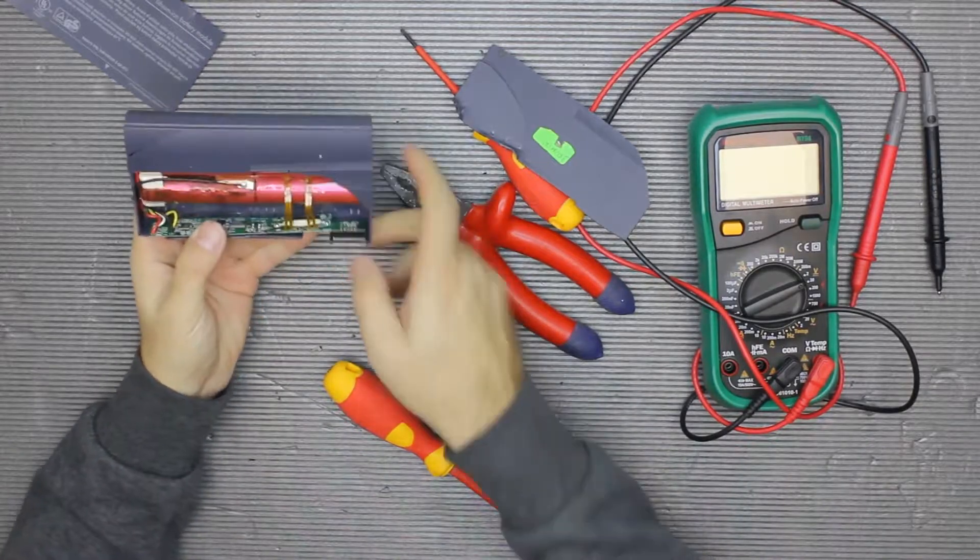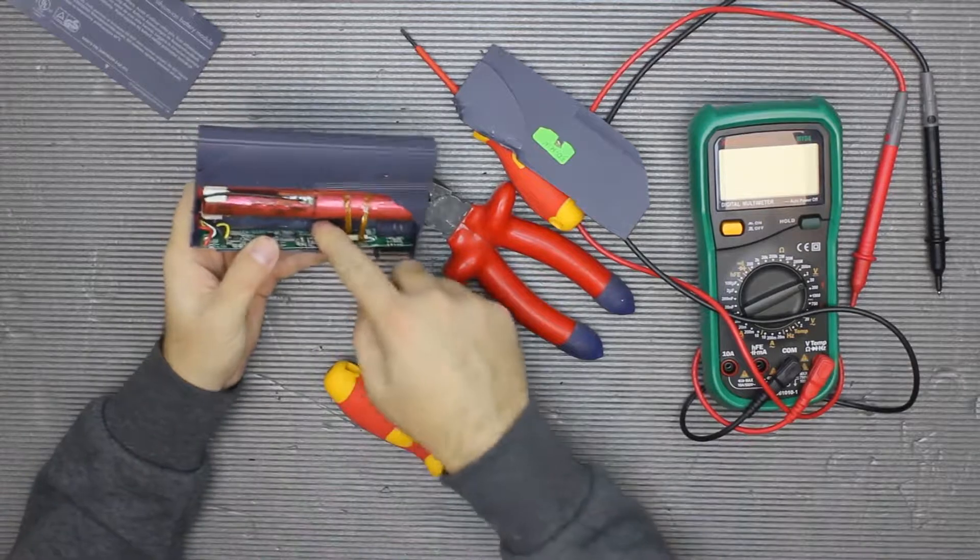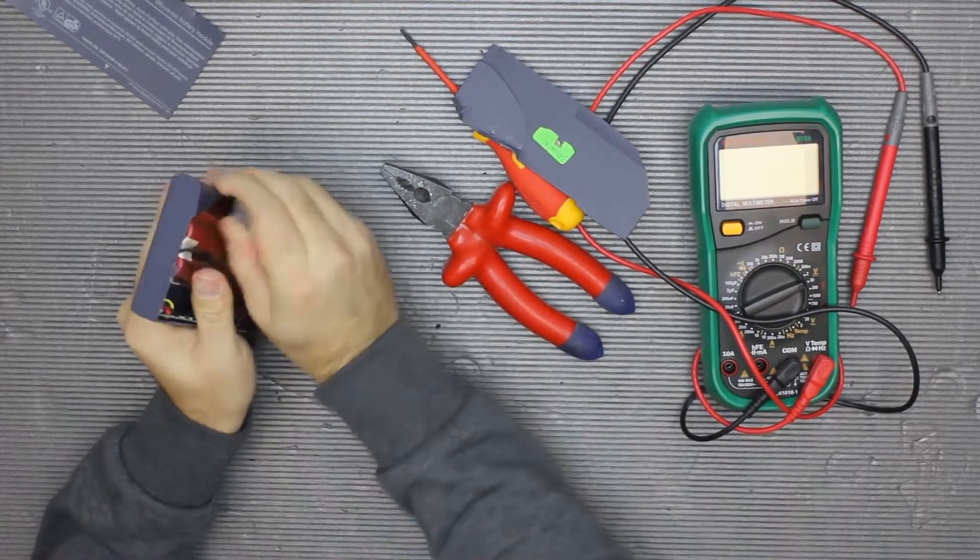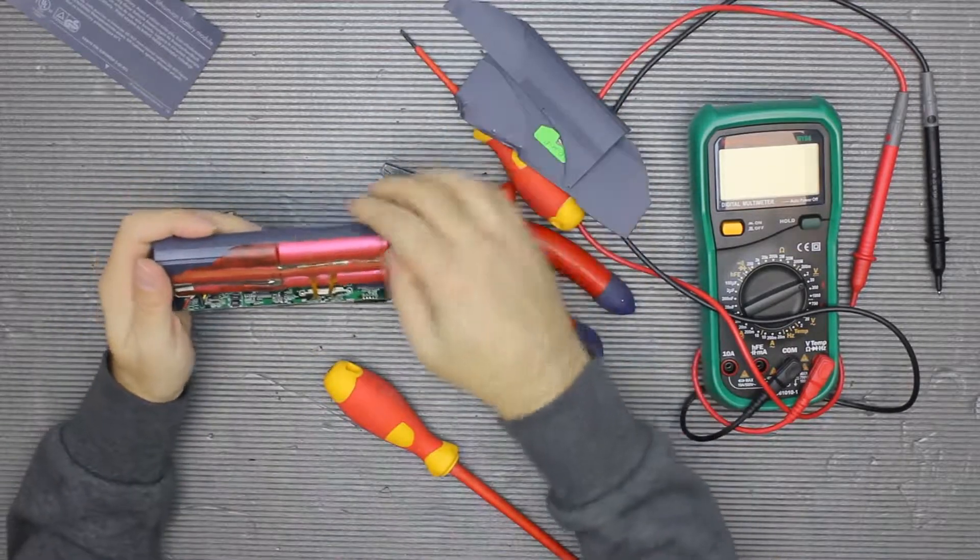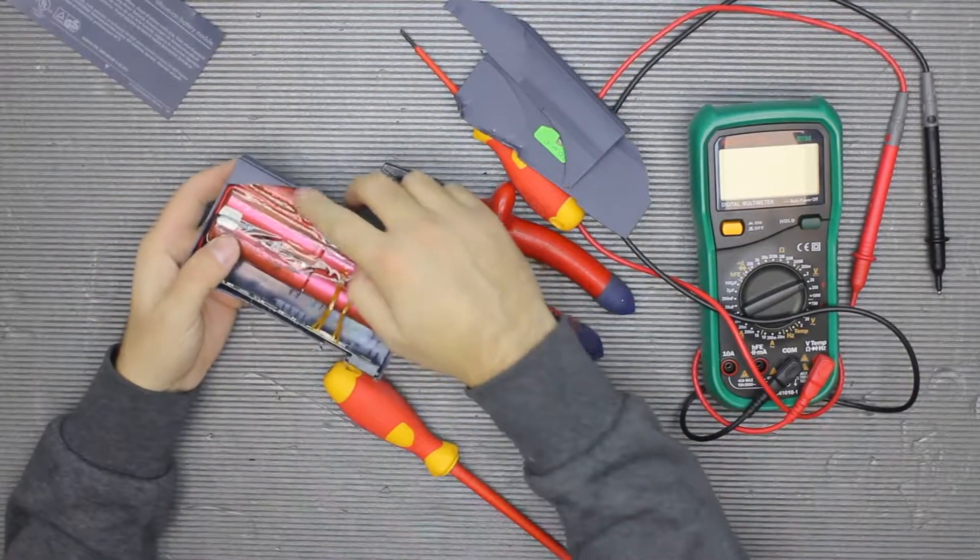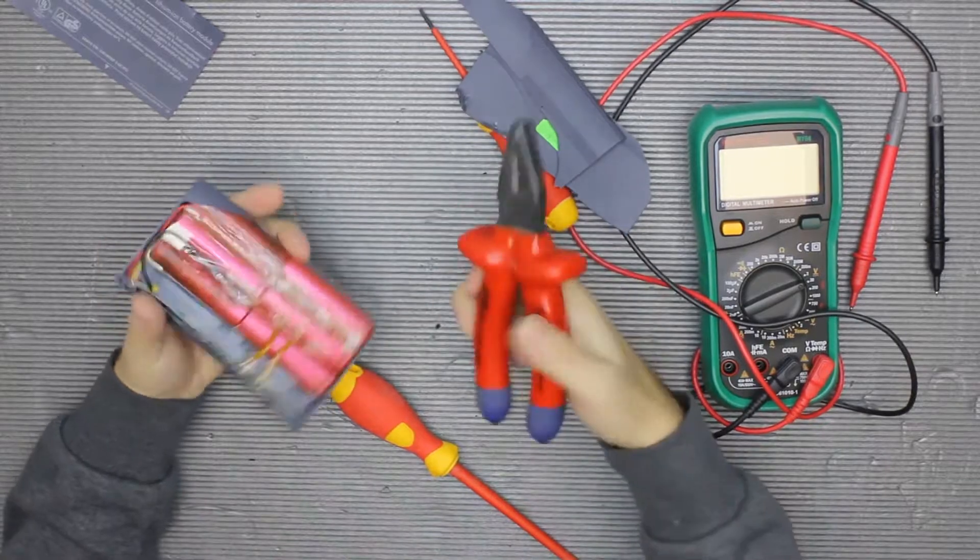Yep, there might be some space here for another row. Wow, these are definitely gone—look at the coloring.